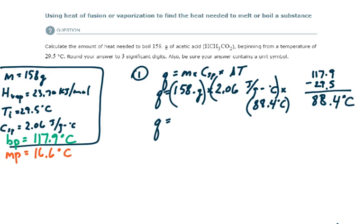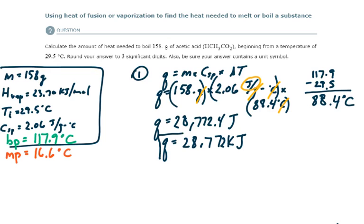So we're going to figure out how much heat is required to raise 158 grams of acetic acid by 88.4 degrees Celsius. This is the specific heat of acetic acid. If I check my units, grams cancels, Celsius cancels, I'm left with joules. The amount of energy or heat is 28,772.4 joules. We can convert this to kilojoules: 28.772 kilojoules. So we've gotten the energy requirement for that first step.